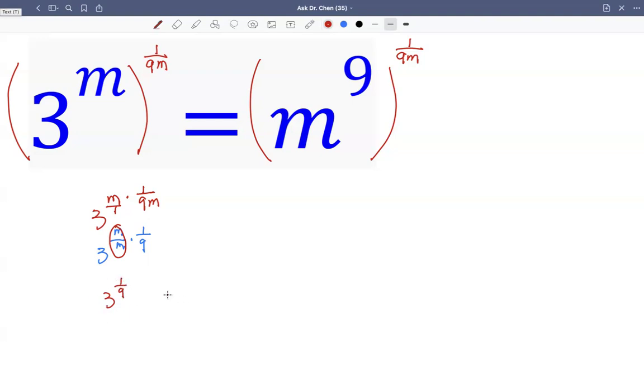The other side, I want to leave only one variable, so the other side I have equals to m raised by 9 times 1 over 9m. Same reason.